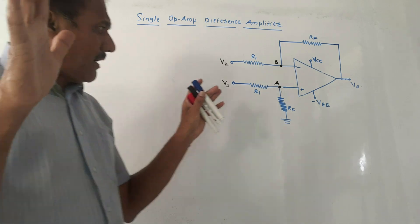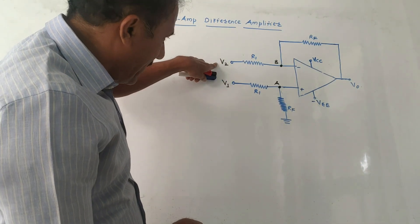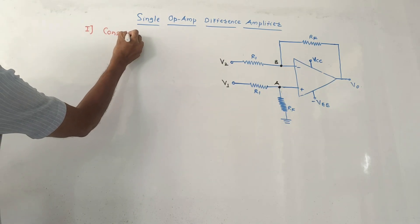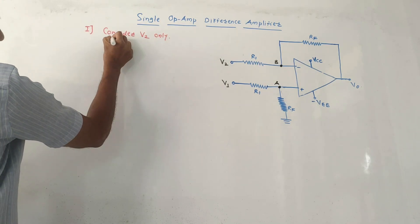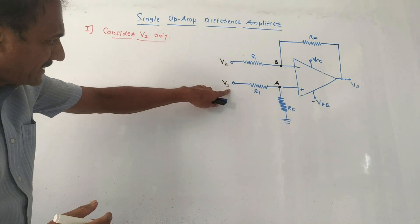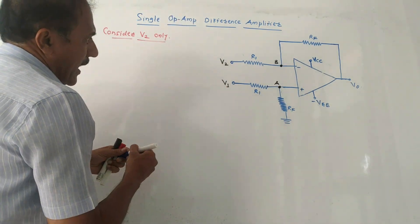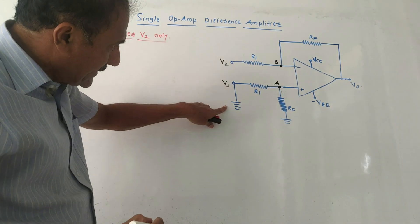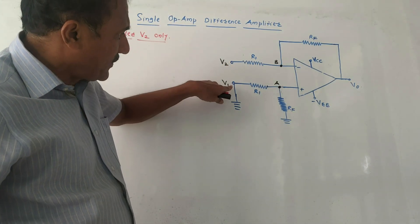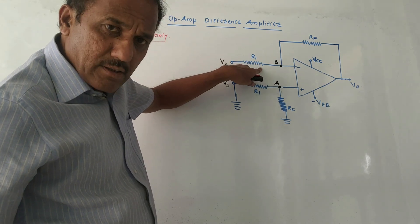The derivation is pretty simple, like the previous derivations. We make use of the superposition theorem — considering only one voltage source at a time. In Case 1, we consider voltage source V2 only. So V1 is grounded and only V2 is active. In this case, the input voltage V2 is applied through resistance R1 to the negative terminal, so the op-amp acts as an inverting amplifier.